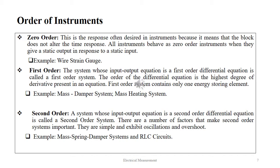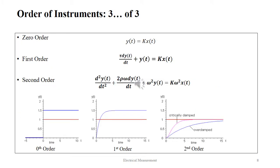A system whose input-output equation is a second order differential equation is called a second order system. There are a number of factors that make second order systems important: they are simple and exhibit oscillations and overshoot. Mass-spring-damper systems and RLC circuits are examples of second order systems. The numerical expressions and graphical representations for zero order, first order and second order systems are shown in this particular slide.